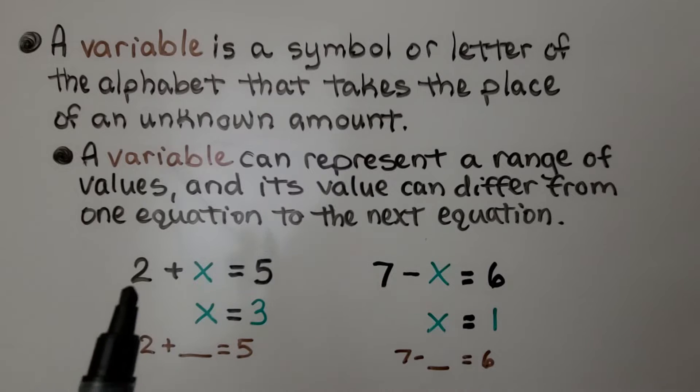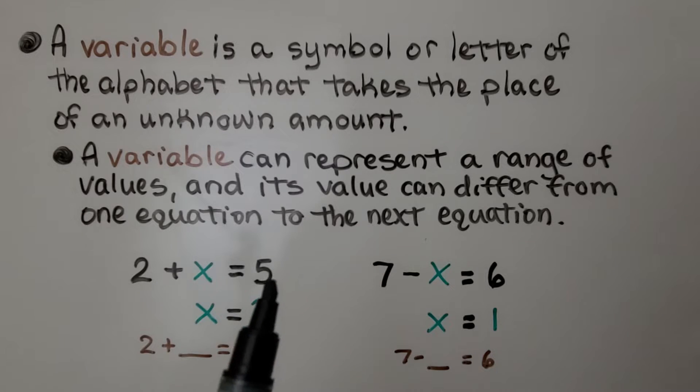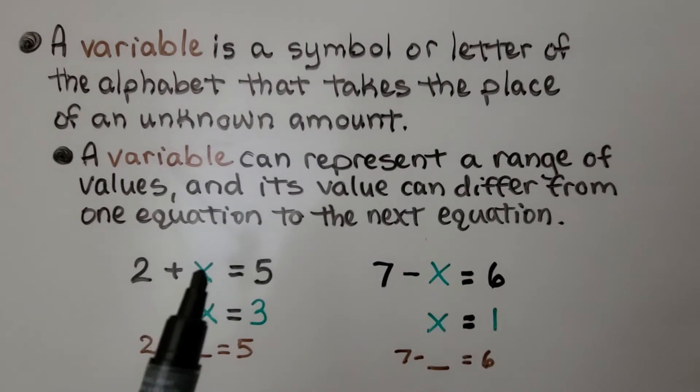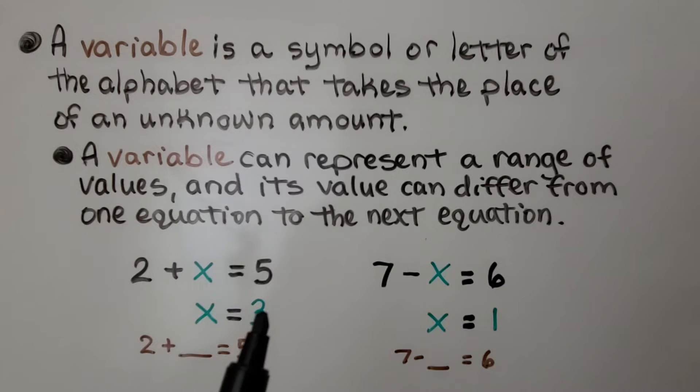Here we have 2 plus x equals 5. The x is taking the place of an unknown amount. It would have to equal 3 in order for this to be 5. We can think of it as 2 plus blank equals 5. The x is taking the place of the blank.